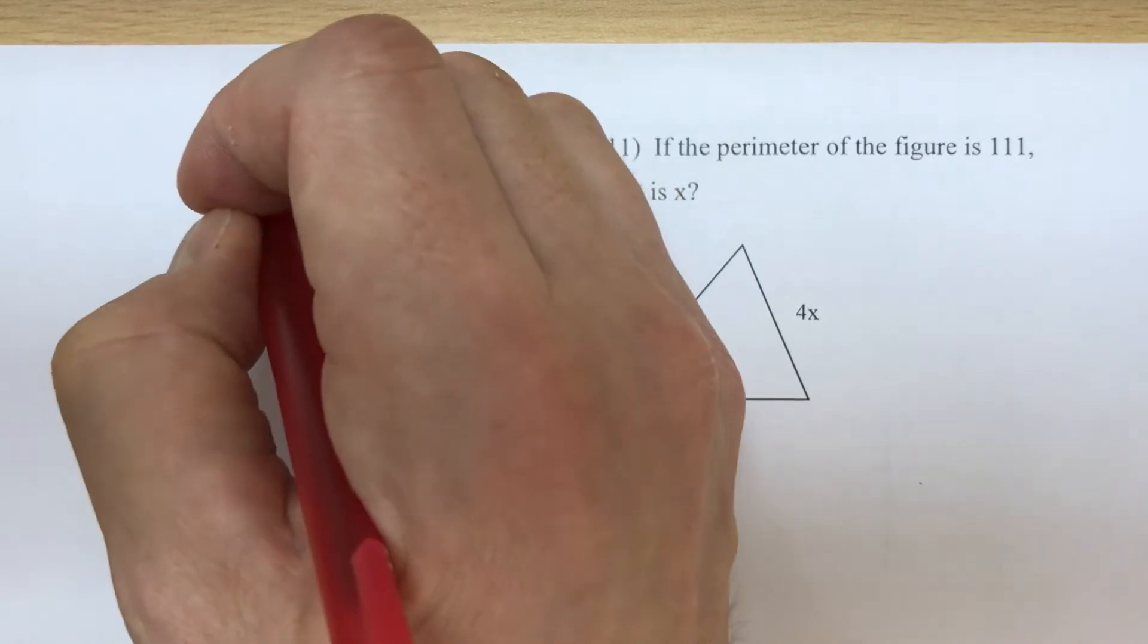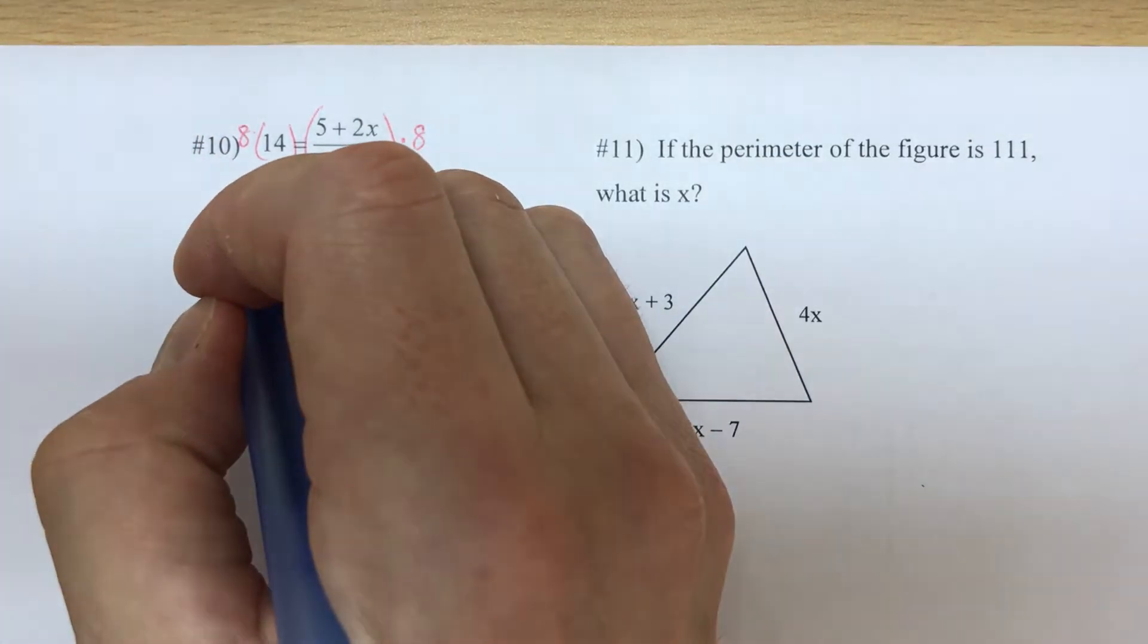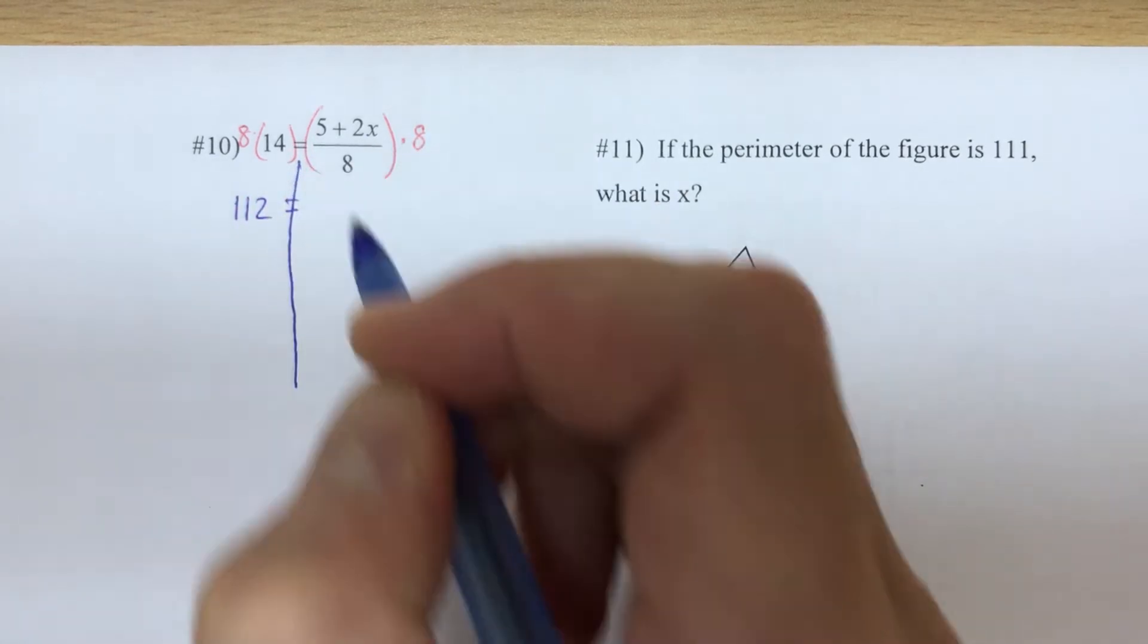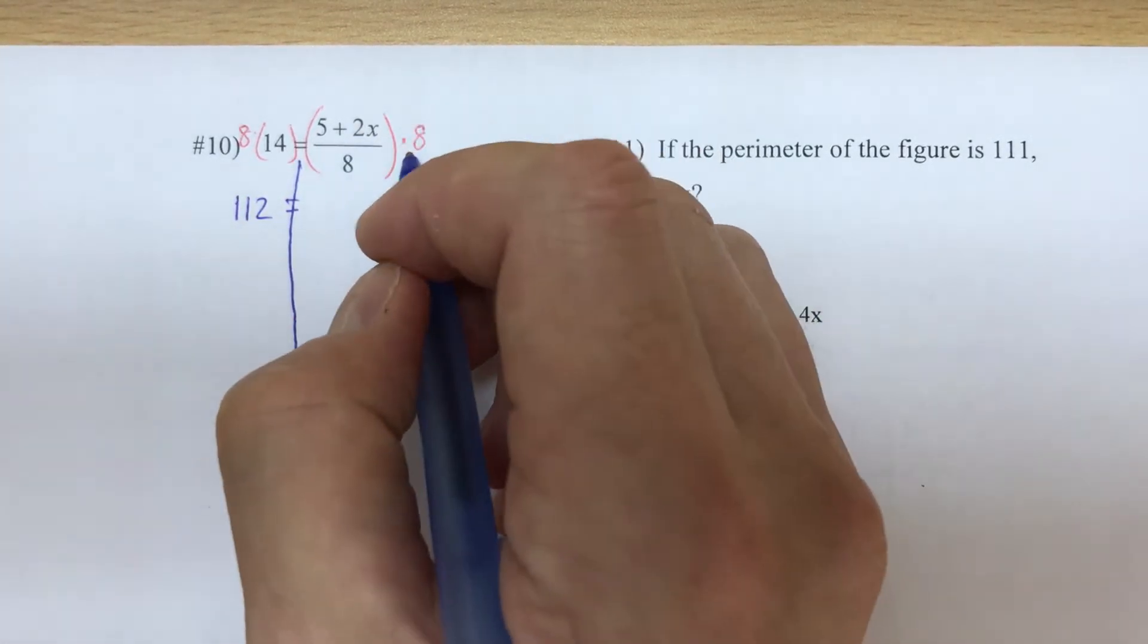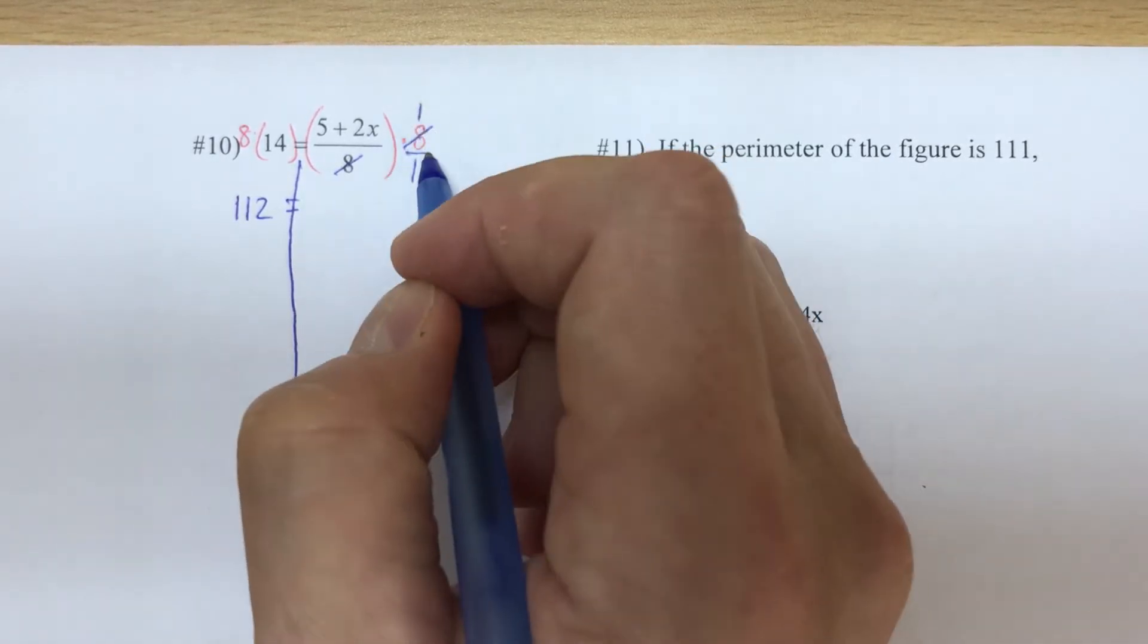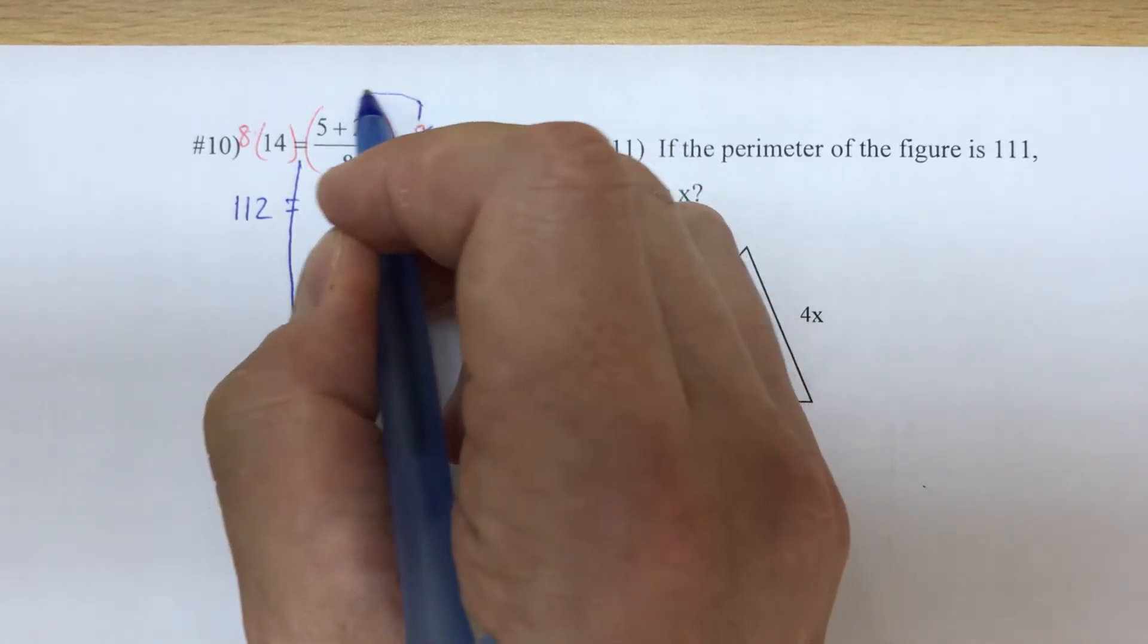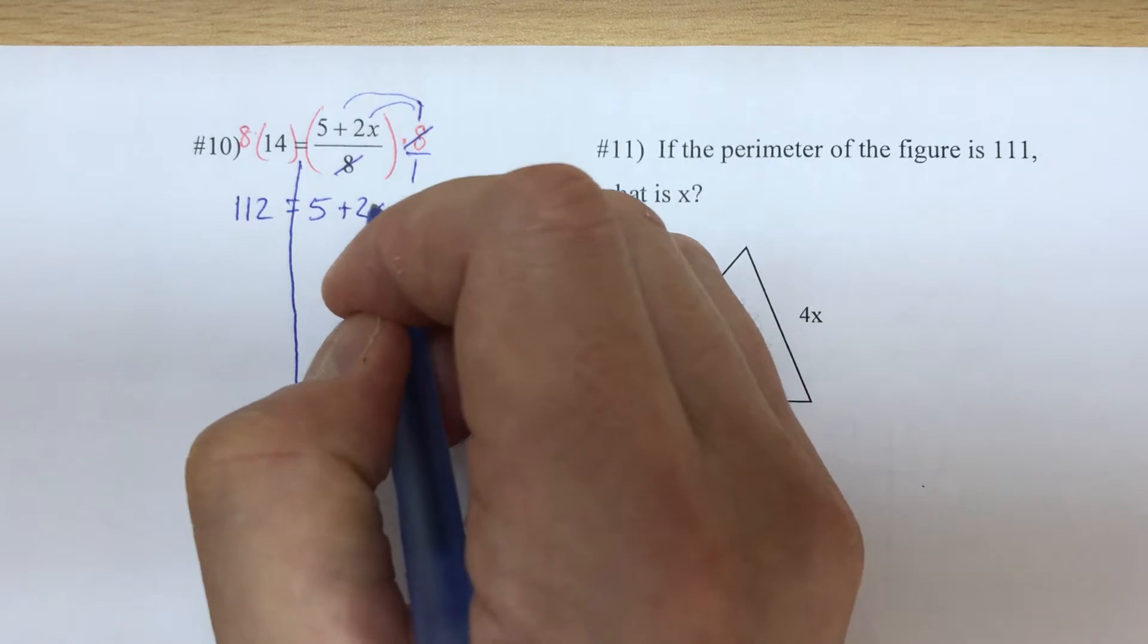Let us undo the division by multiplying the right side by eight and the left side by eight. Now this will give us 112 equals - now again I'm going to divide first. This is like eight over one, eight divided by eight reduces to one, and I would distribute the one, but one times five is five, one times 2x is 2x, so it's the same thing.